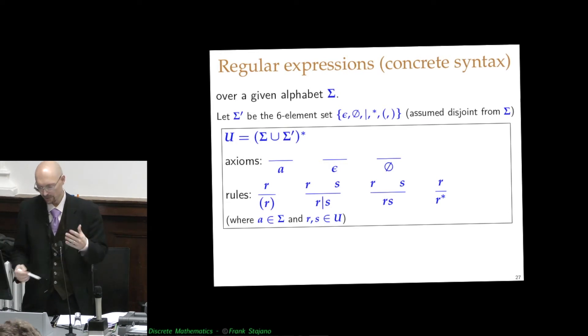Are based on the alphabet of the strings plus these meta symbols that don't occur in the actual strings of your language. And these symbols are this other epsilon.